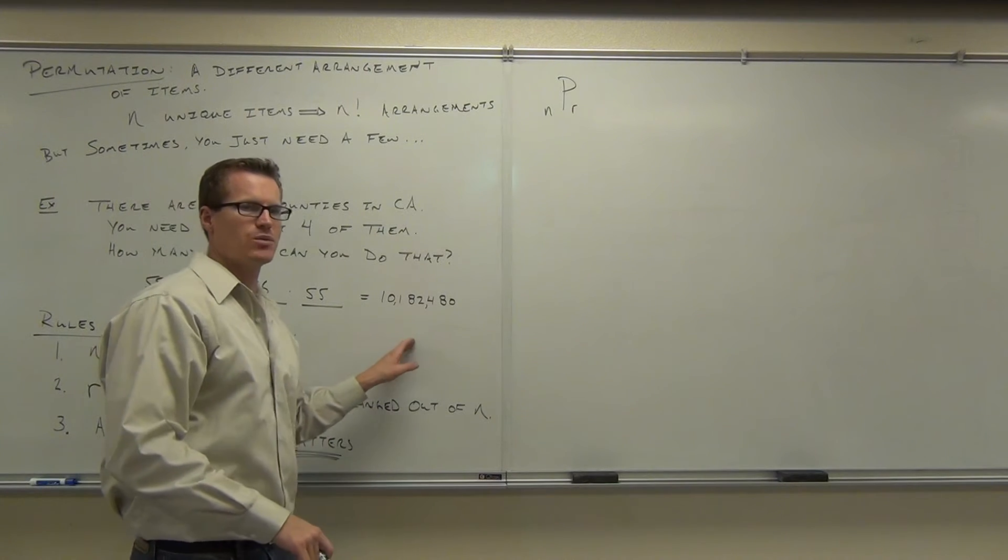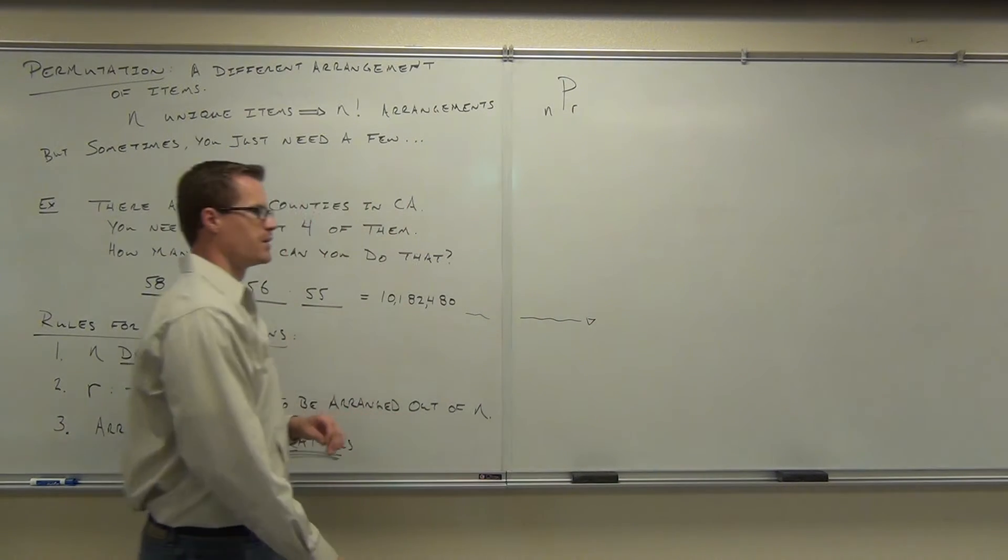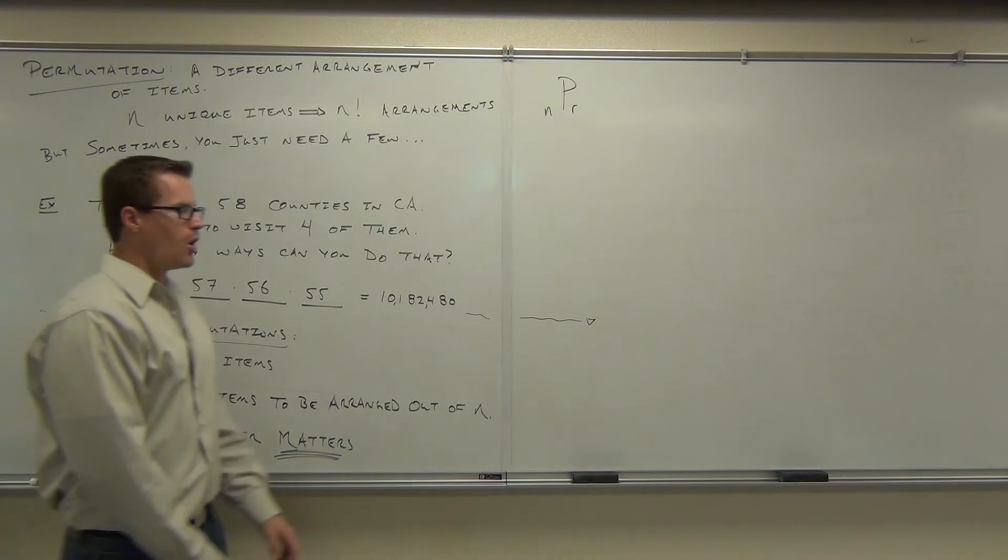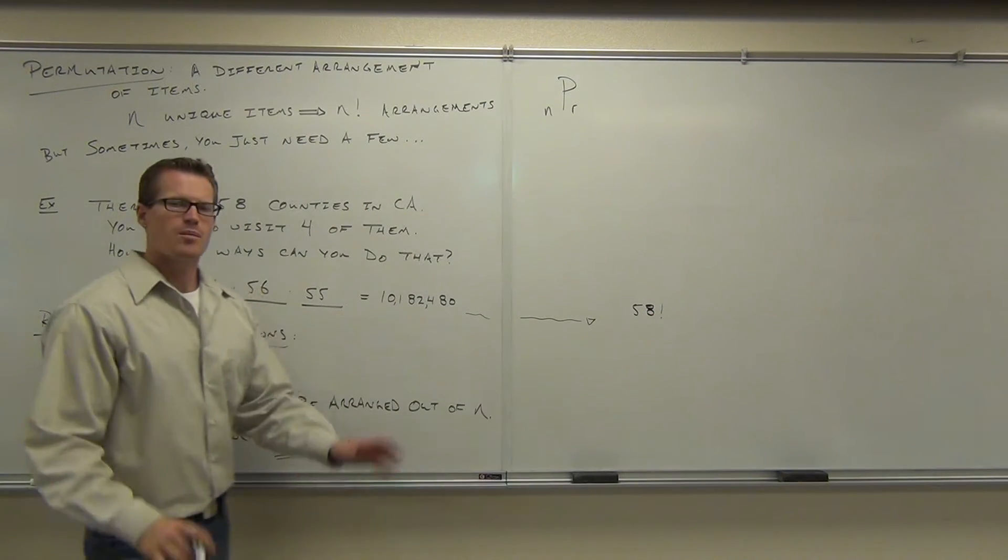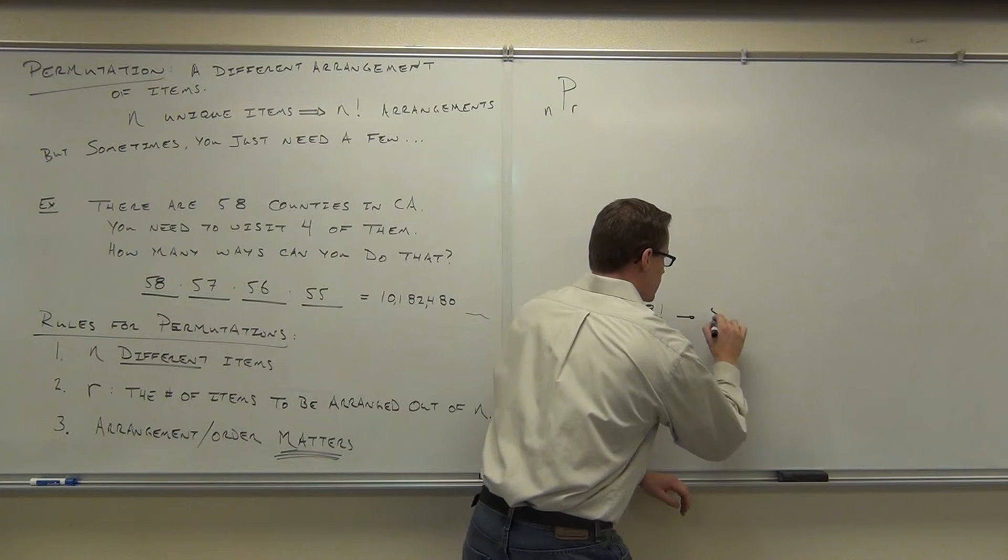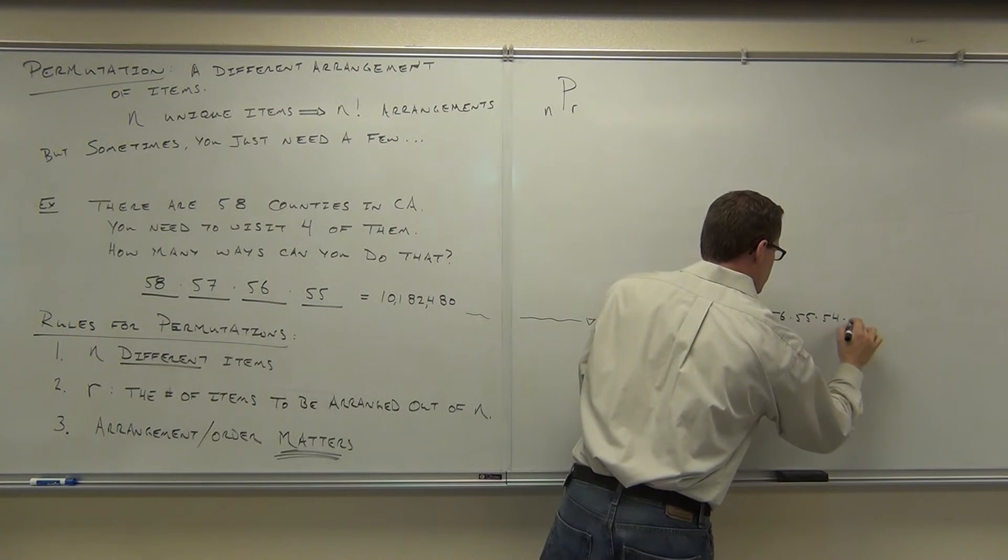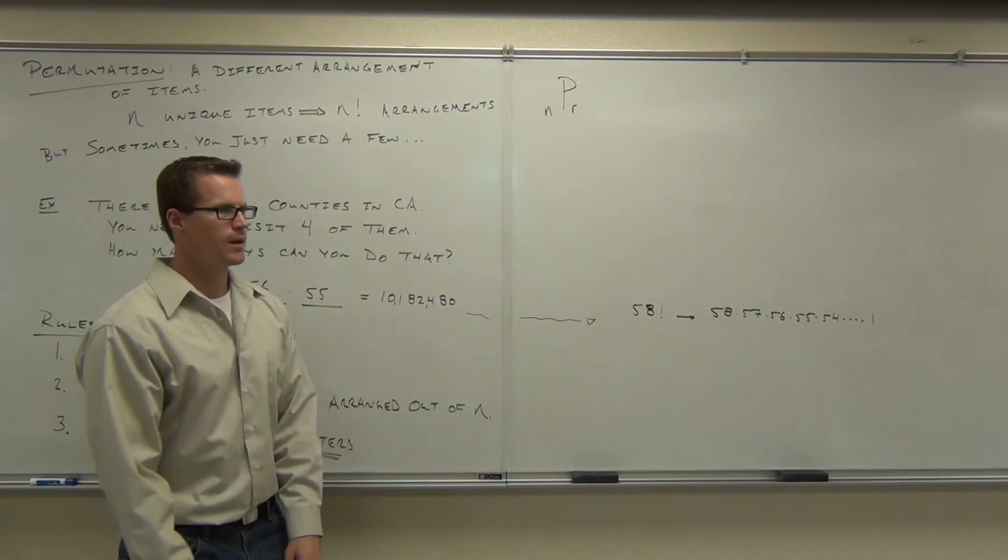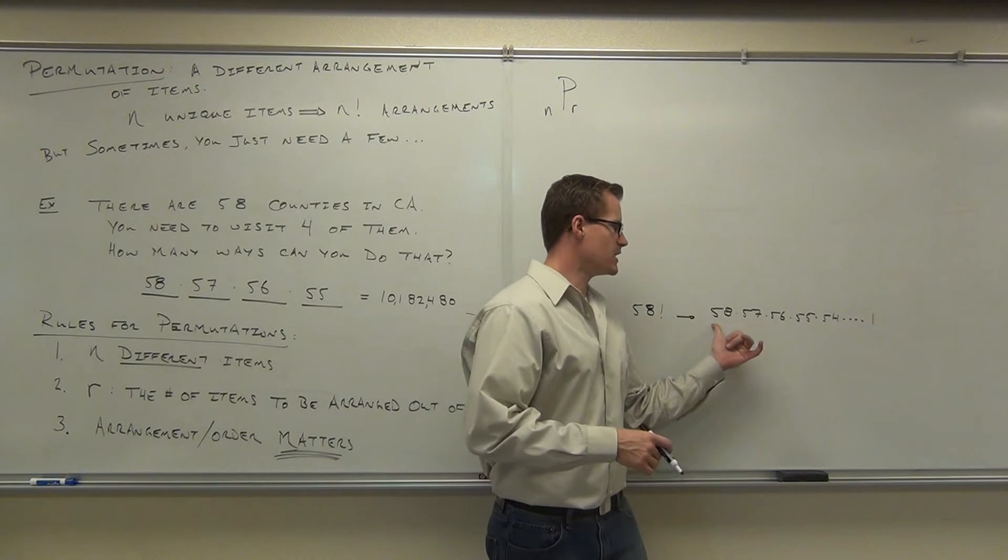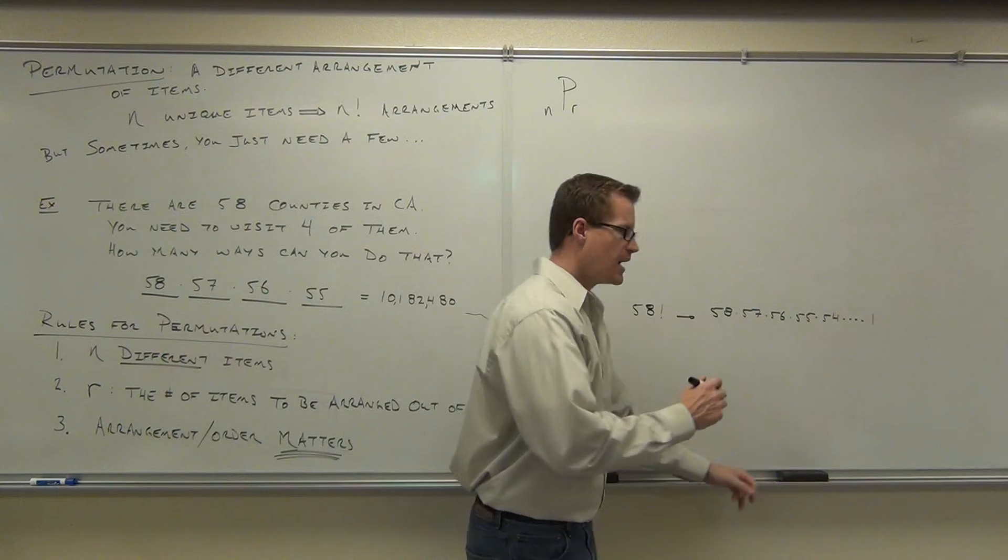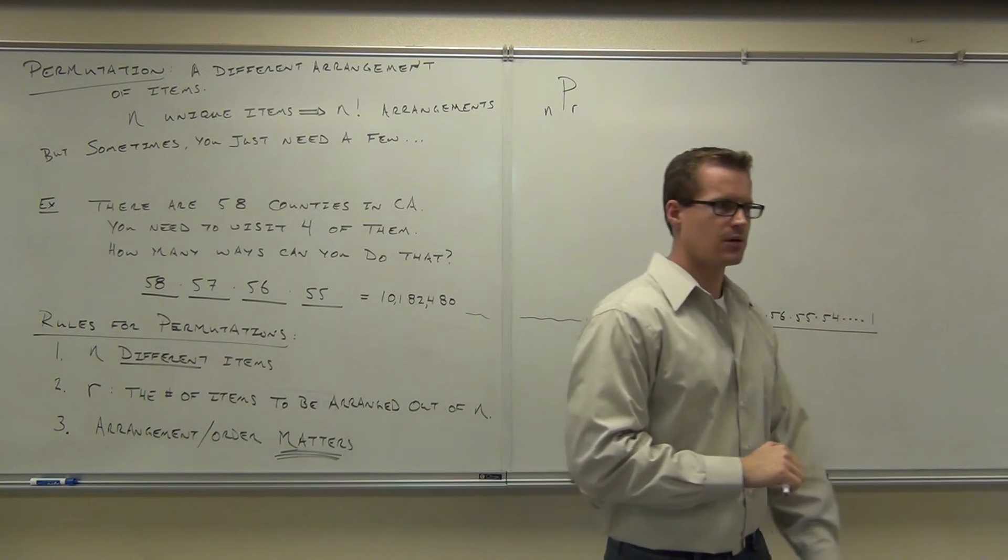Now, I want to show you something kind of neat with this example. Watch this for a second. I'm going to bring this over here. If we visited all 58 counties, we'd have 58 factorial different arrangements, right? But we're not. We're not visiting that many. This would be 58 times 57 times 56 times 55 times 54, all the way down to one. What we're doing in this, with this formula I'm about to give you, is we're saying, okay, you're not visiting all 58 of them. In fact, how many are you not visiting? If you only pick four out of them, how many are you not visiting? 54.